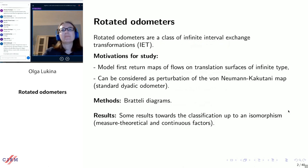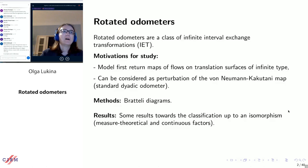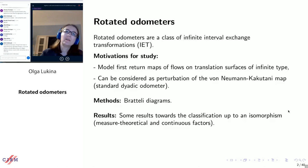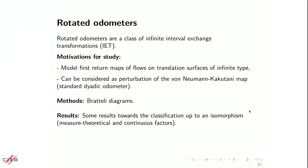What are Rotated Odometers? This is a specific class of exchange transformations. And why are Rotated Odometers interesting? I can name a couple of reasons. First, Rotated Odometers model first return maps of flows of rational slope on translation surfaces with interesting topology and geometry. Second, we can consider Rotated Odometers as a perturbation of the von Neumann-Kakutani map, which is basically the standard dyadic odometer, which has appeared already a few times in this conference. The methods we are going to use are substitutions and Brateli diagrams, which we have also seen many times. So I thank the previous speakers for setting the scene for me.